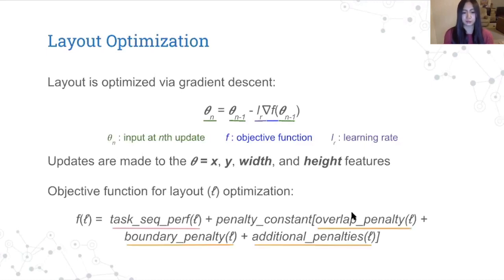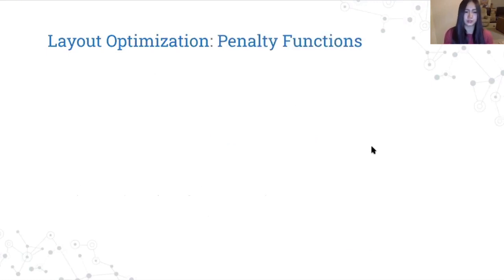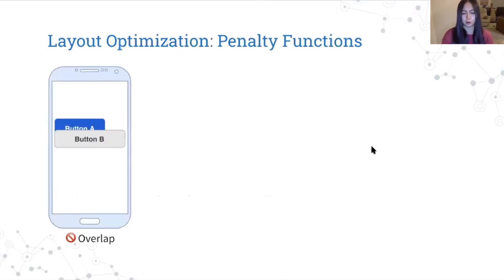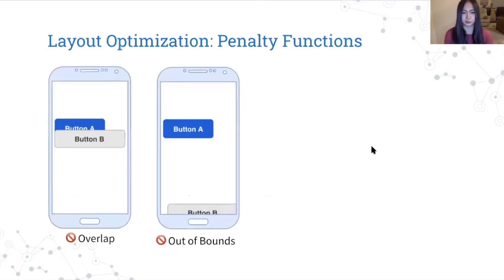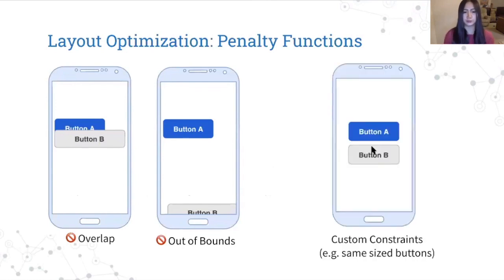Our objective function is the sum of the predicted task performance values for the entire task sequence, plus some penalty functions that check for undesirable situations, and will add a large value to the objective function when they detect those situations. In more detail, when we update each UI element independently, you may end up with undesirable situations, like two UI elements overlapping or elements going out the boundary of the phone screen. And with differentiable penalty functions, we can steer the gradient to eliminate these situations when detected. Also, if designers will like a certain outcome in their optimized layout, like making sure two elements are the same size, they can enforce these custom constraints with penalty functions.